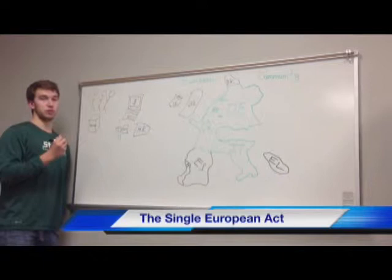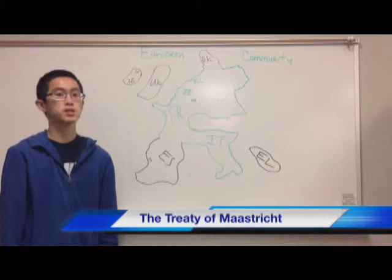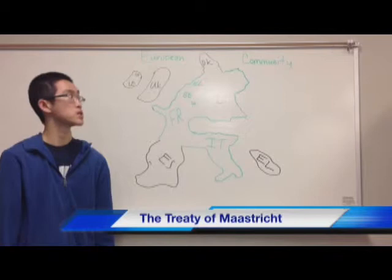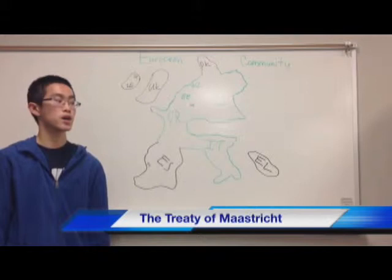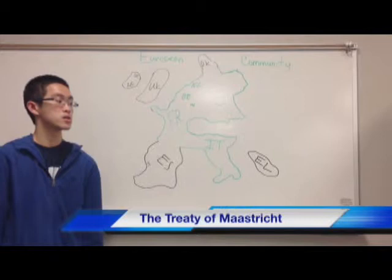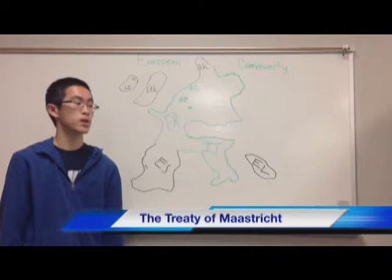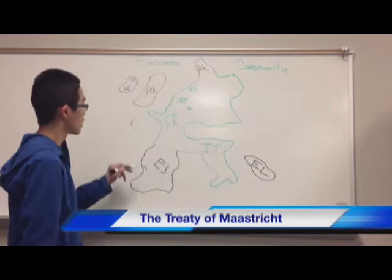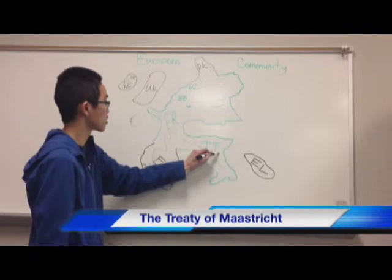The Treaty of Maastricht, signed in 1992, advanced integration toward a monetary union. The EC changed its name to the EU, or the European Union. The treaty created a single currency, the Euro, and centralized monetary and fiscal policy. It established convergence criteria — requirements for each nation to be admitted into the EU — though these were not strictly followed. All countries except the UK, Denmark, and Greece joined and implemented the Euro.